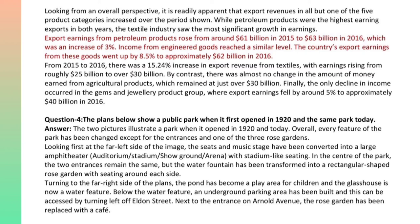By contrast, there was almost no change in the amount of money earned from agricultural products, which remained at just over $30 billion. Finally, the only decline in income occurred in the Gems and Jewelry product group, where export earnings fell by around 5% to approximately $40 billion in 2016.